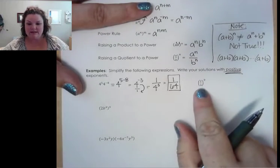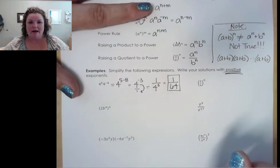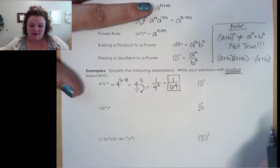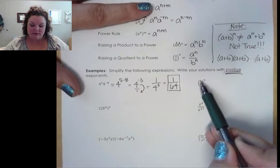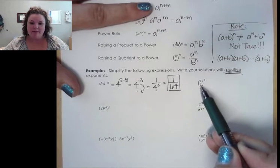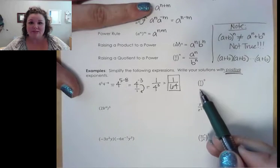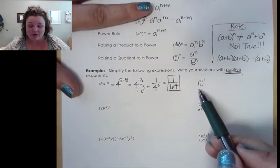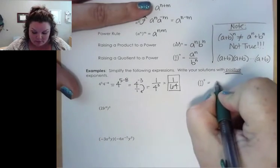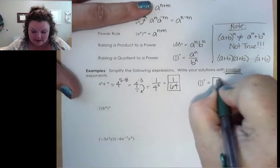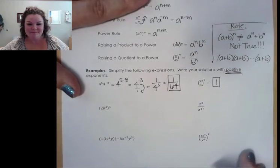Let's look at the next one: 2 ninths to the 0 power. I'm not going to worry about distributing that 0 to top and bottom, because our very first exponent rule said that any number raised to the 0 power, no matter how ugly it is, just ends up being 1.